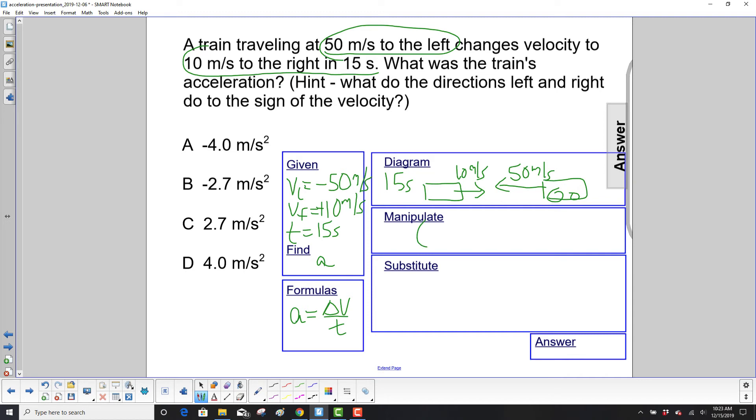So there's no manipulation of the equation required because we're trying to find acceleration. So our final velocity is 10 meters per second. The initial was a minus 50.